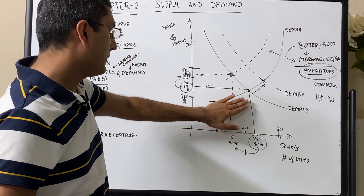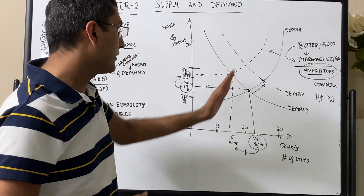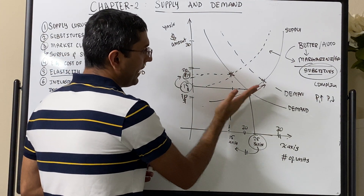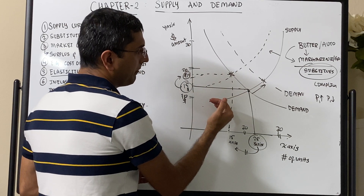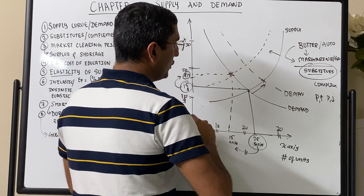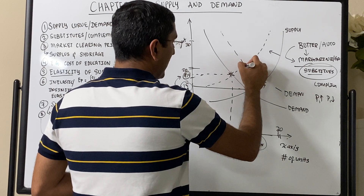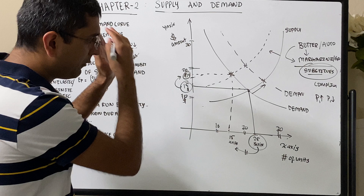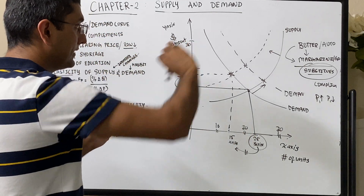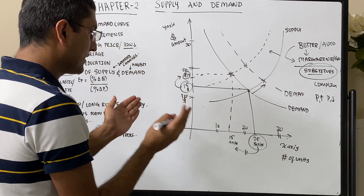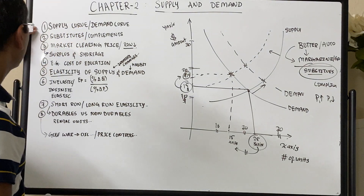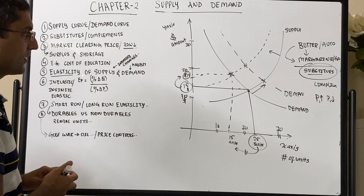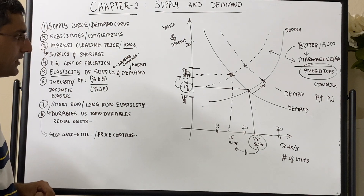So we learned about the demand curve, the supply curve, and what happens when raw material prices go up — the supply curve shifts up and eventually the new price is much higher. We covered some parts of this: clearing price, surpluses, and shortages. How would we draw surpluses and shortages?